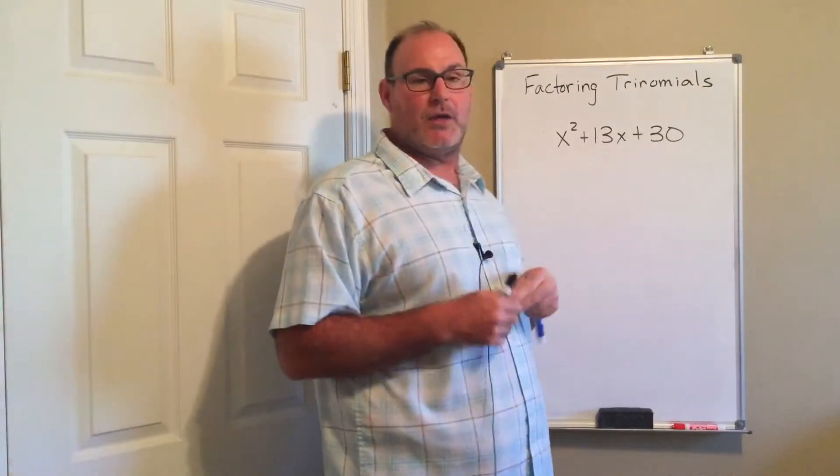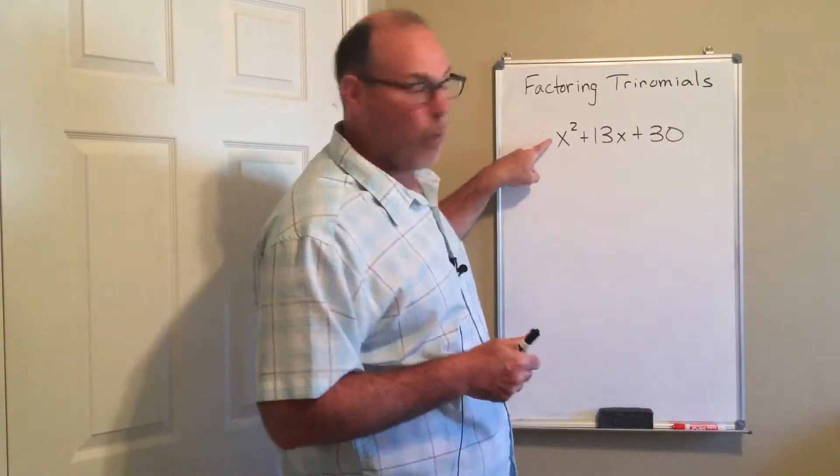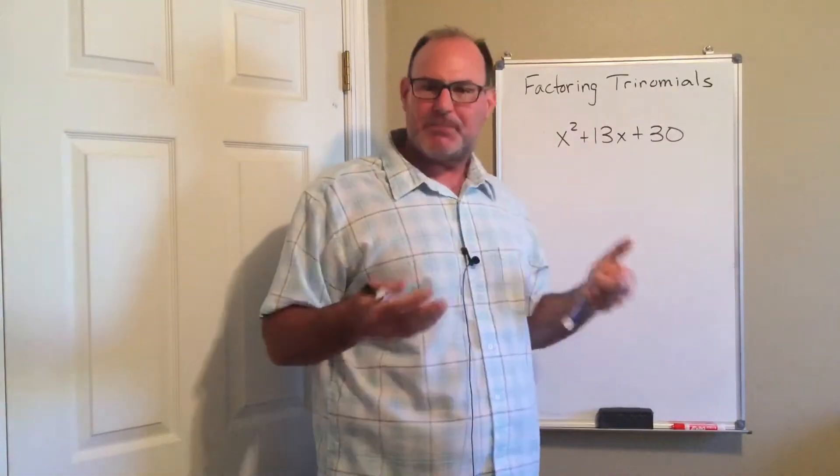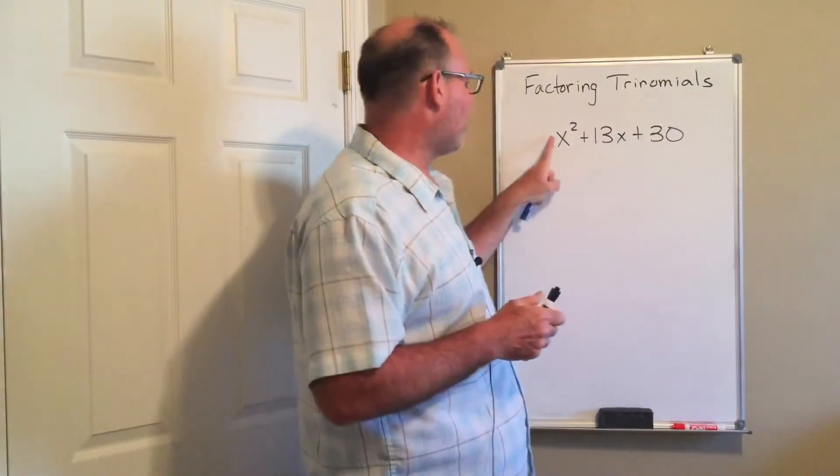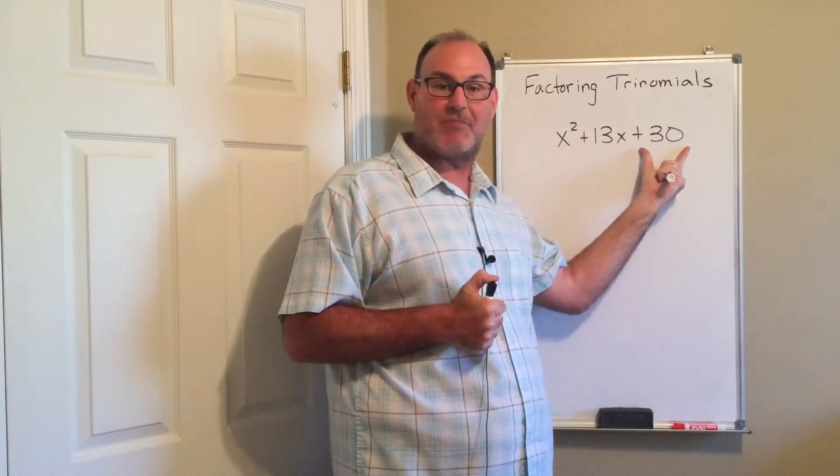This first trinomial and the topic of the first couple examples, notice there is a 1 in front of the x squared term. So that simplifies my process. When I have a 1 in front of the x squared, I just really have to consider the factors of my lasts.